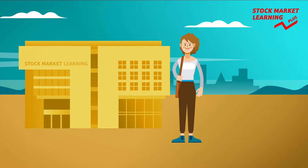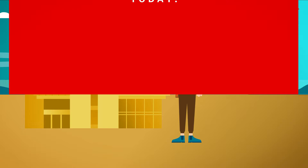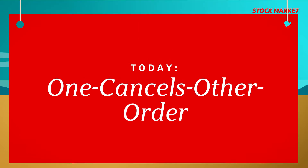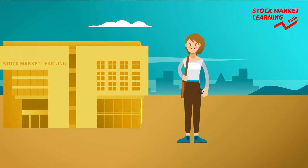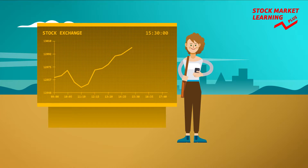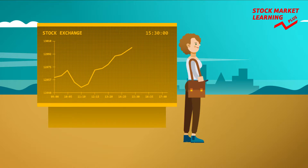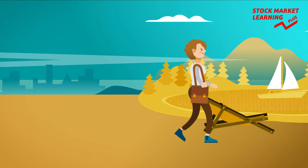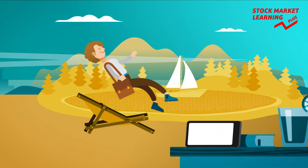We'll explain important terms to you so you can get along well in the world of stocks and shares. Today: the one cancels other order. Share prices are in constant ups and downs, and it's hard to estimate whether they fall or rise. Investors need to observe the market intensively to be able to react quickly. But what happens if they can't react straight away? For this case, there are different order additions — orders that automatically react to particular market movements.